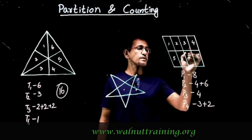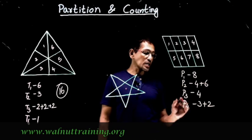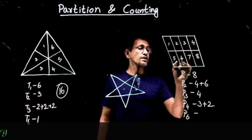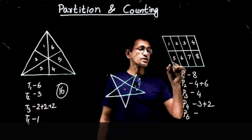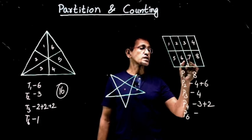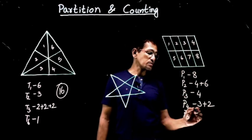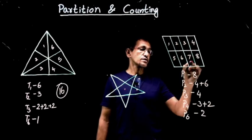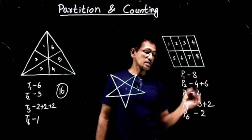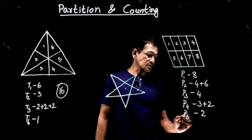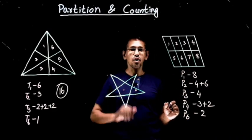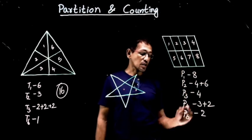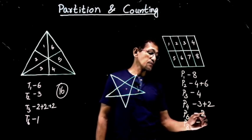P5 — five pieces at a time — do we have a parallelogram? No. How about six pieces together? One, two, three, five, six, seven is a parallelogram; two, three, four, six, seven, eight is another. So P6 gives two. Seven pieces together — not a parallelogram at all. Eight pieces together — all pieces together — that's one parallelogram, so P8 gives one.